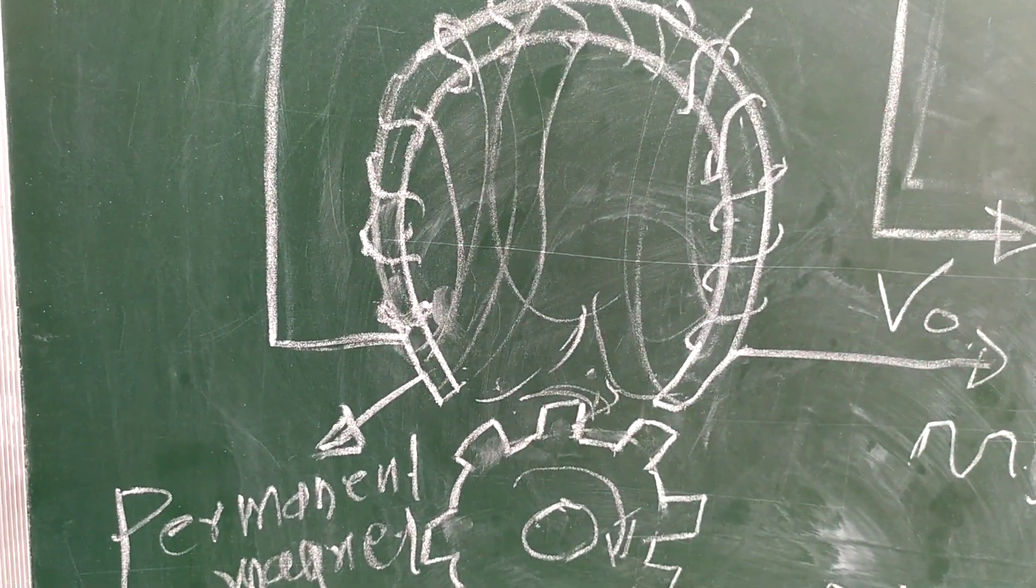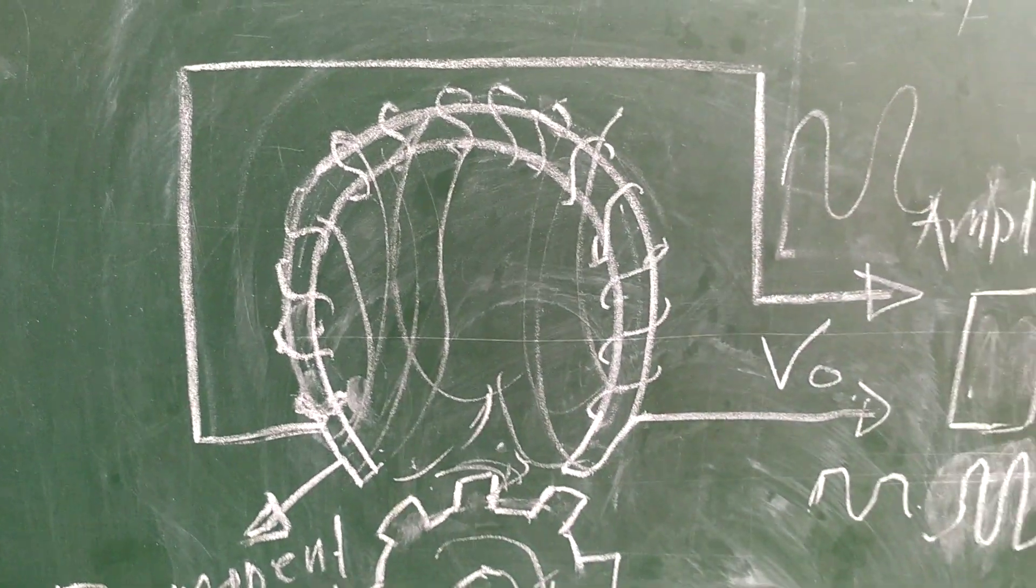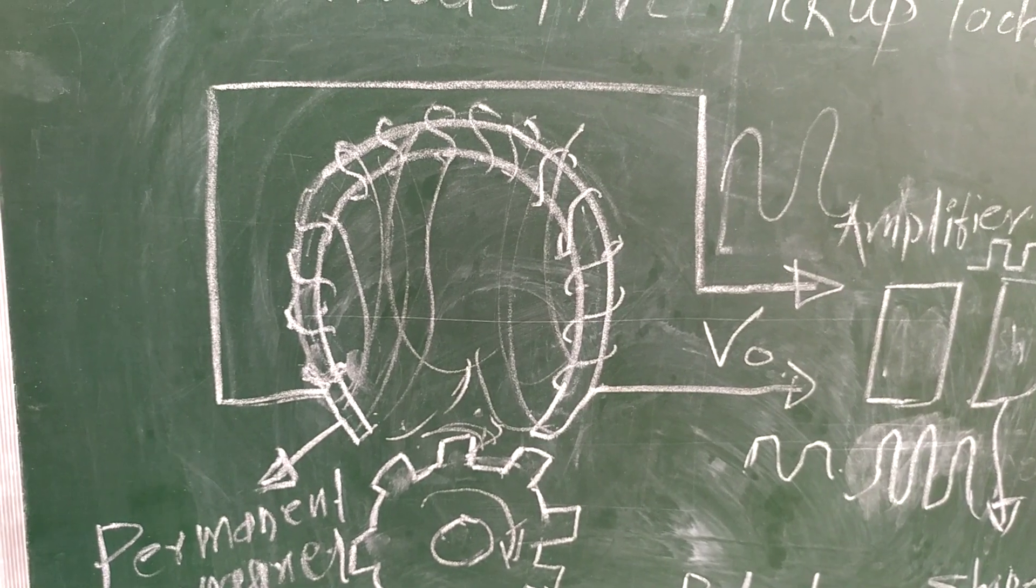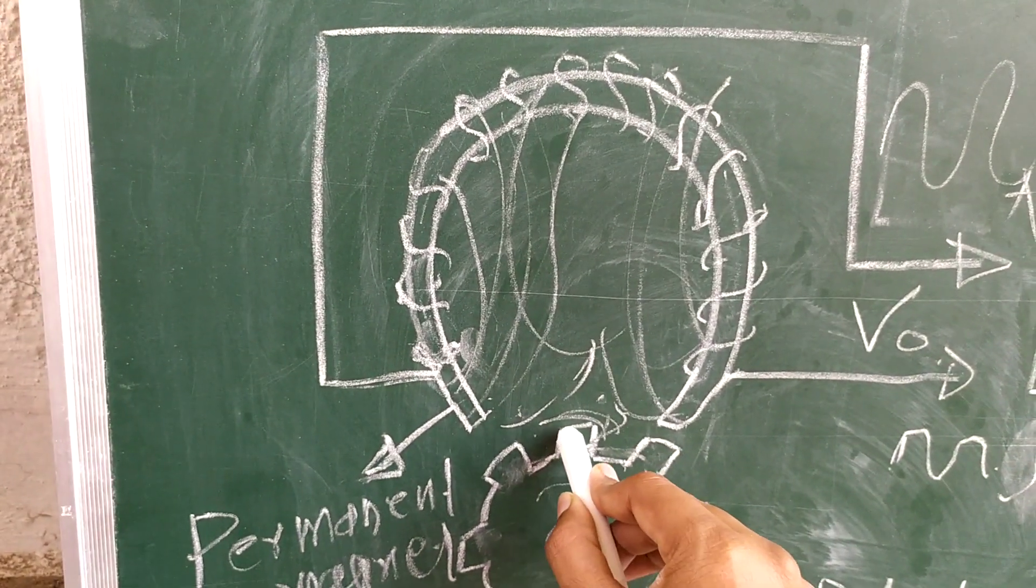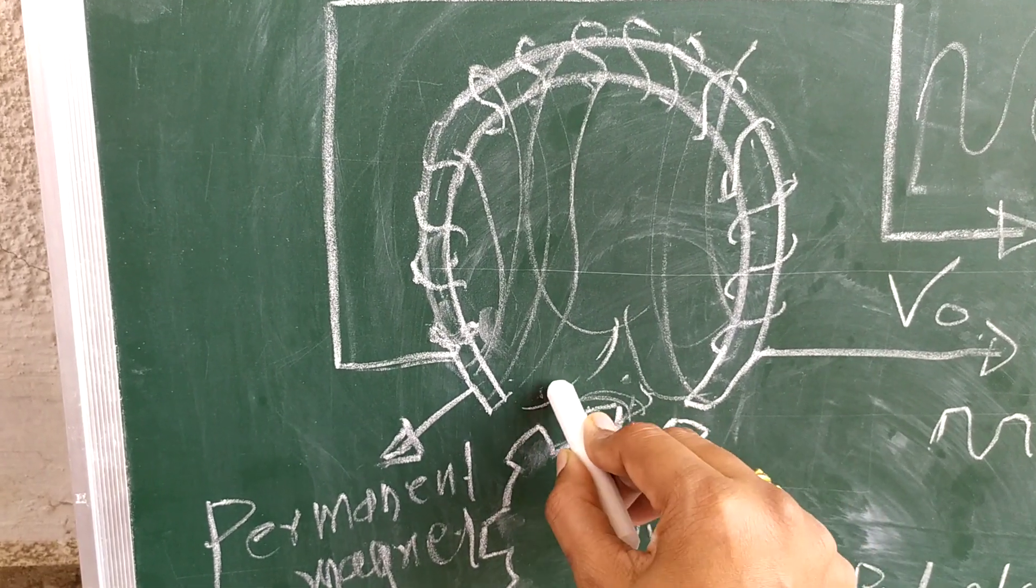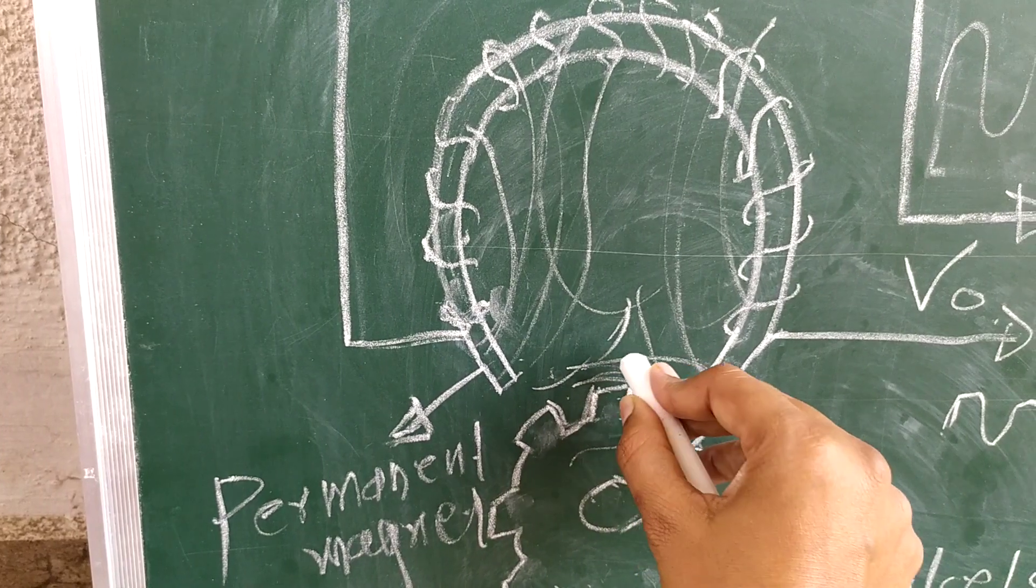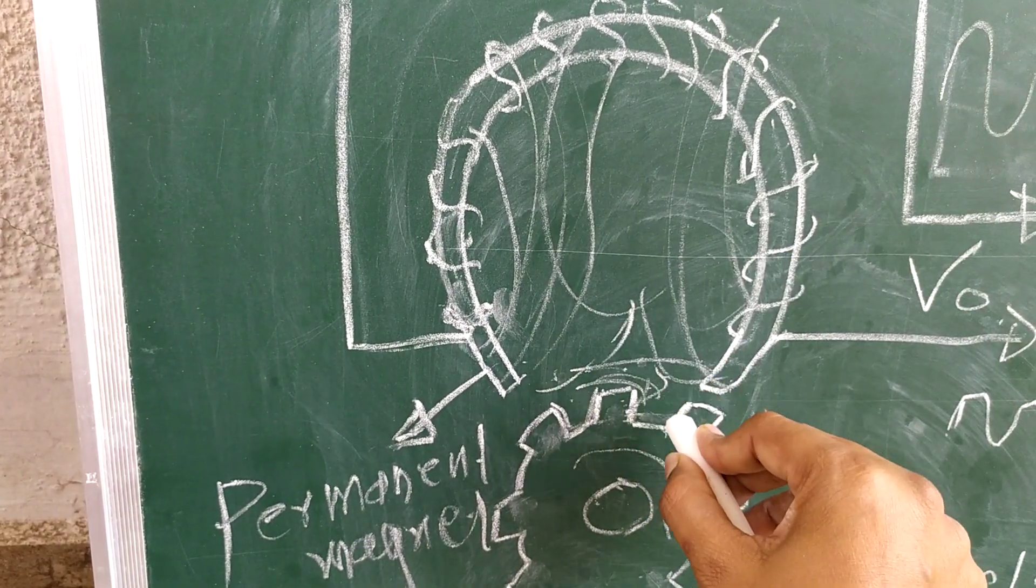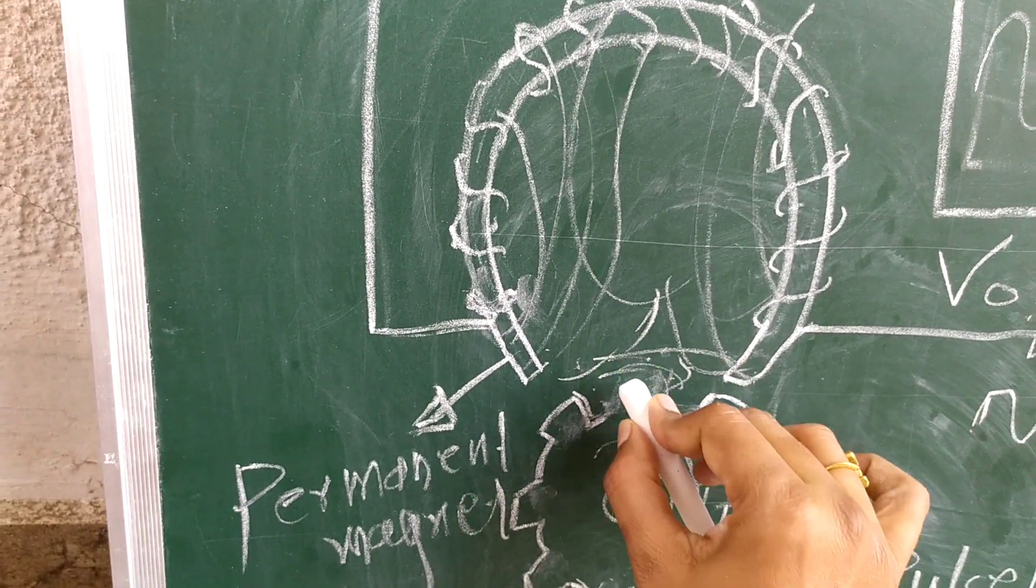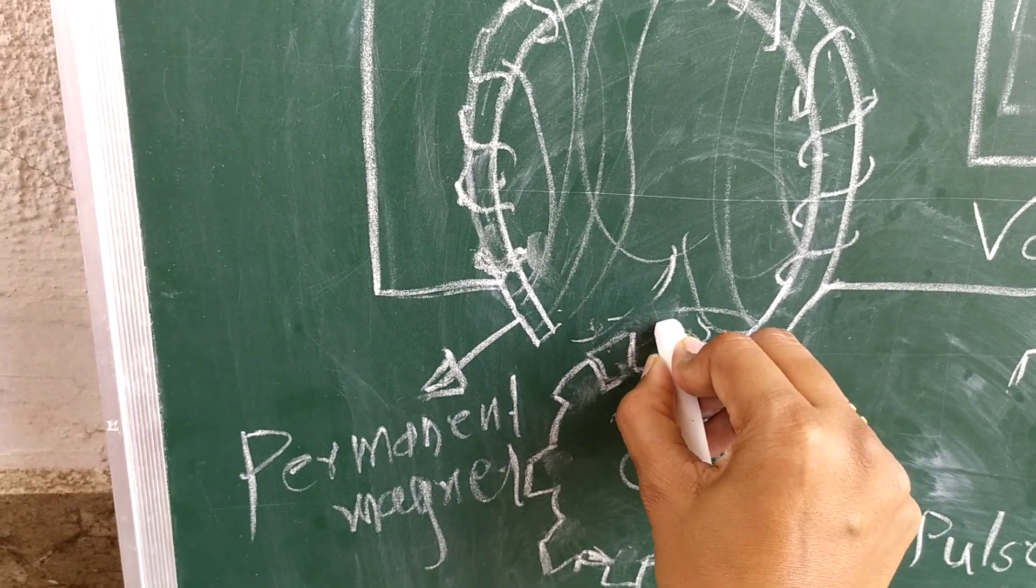Due to cutting the flux, there is a variation - the EMF will expand and collapse, expand and collapse. This action happens when the peak of the tooth comes in between; it will cut the flux. When the cavity comes, it will expand. So when the tooth comes, it collapses, and when the cavity is in between, the EMF will expand.